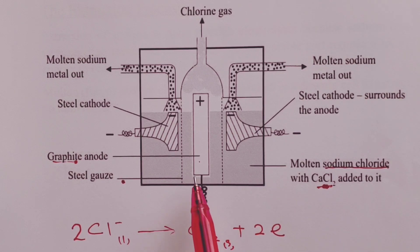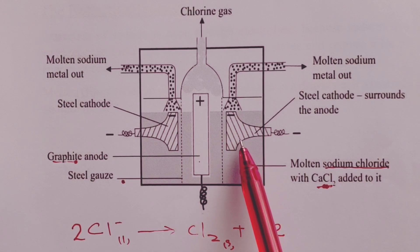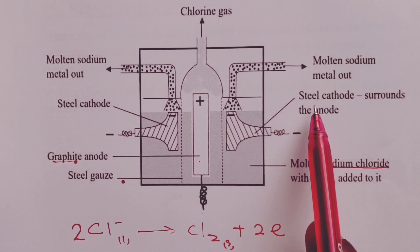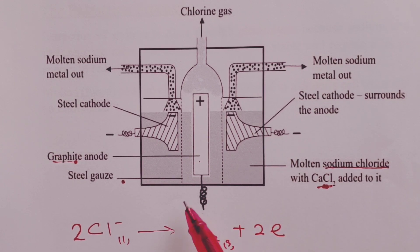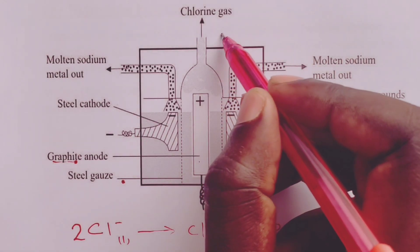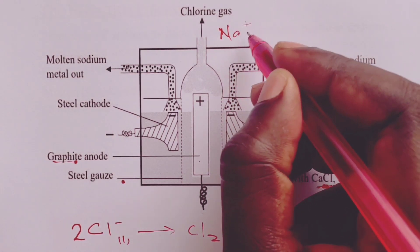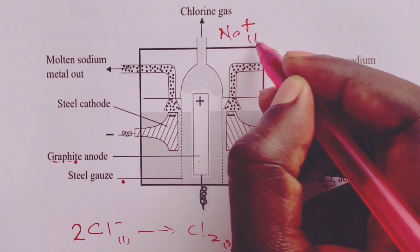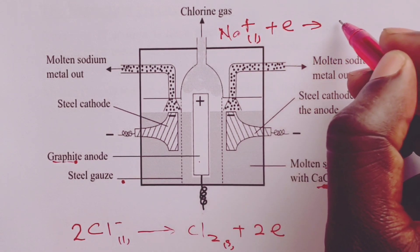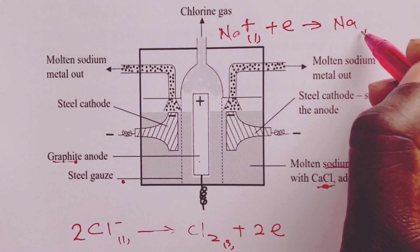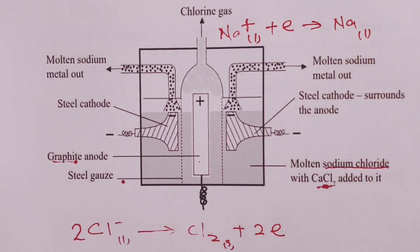Now our diaphragm is in turn surrounded by cylindrical steel cathode where we are discharging sodium ions to form molten sodium. The equation for the discharge of sodium ions is: Na⁺(l) + e⁻ → Na(l).